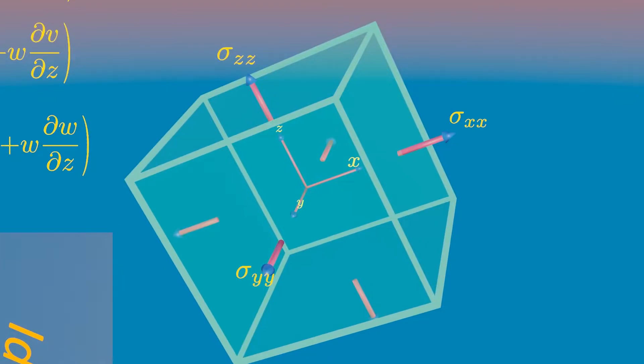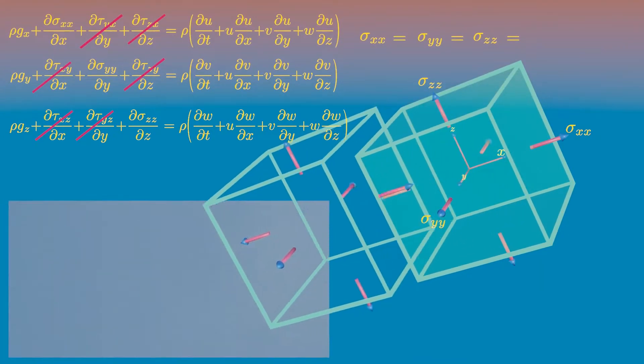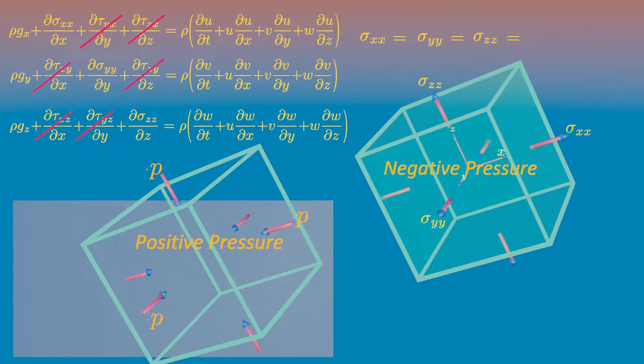Since these normal stresses have all been defined as force per unit area, they act as positive outward. But we know pressure always acts in opposite direction, perpendicular like this. And as a convention, positive pressure produces a compressive stress.